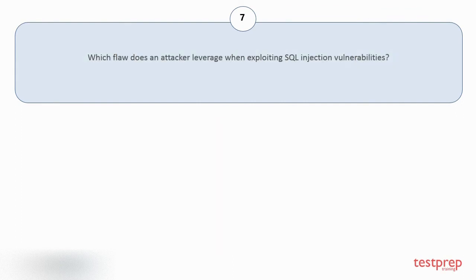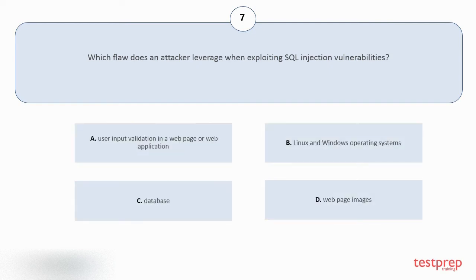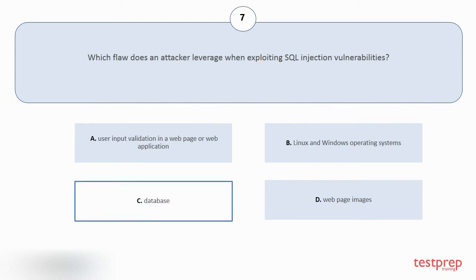Question number 7. Which flaw does an attacker leverage when exploiting SQL injection vulnerabilities? Your options are: A. User input validation in a web page or web application. B. Linux and Windows operating systems. C. Database. D. Web page images. The correct answer is option C.